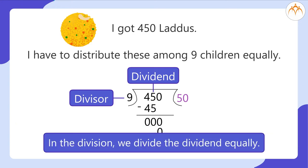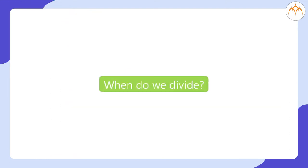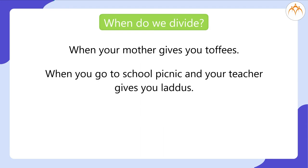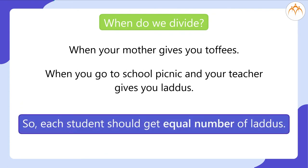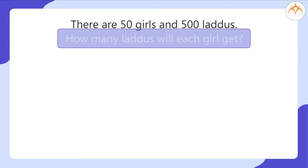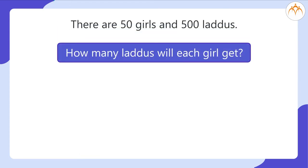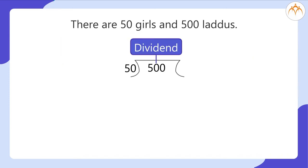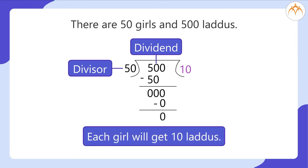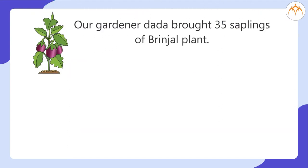In division, we divide the dividend equally. When do we divide? For example, when your mother gives you toffees, or when you go on a school picnic and your teacher gives you laddus — each student should get an equal number. For example, there are 50 girls and 500 laddus. How many laddus will each girl get? Here 500 is the dividend and 50 is the divisor, so 500 divided by 50 is equal to 10. Each girl will get 10 laddus.